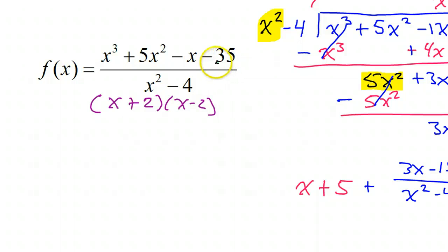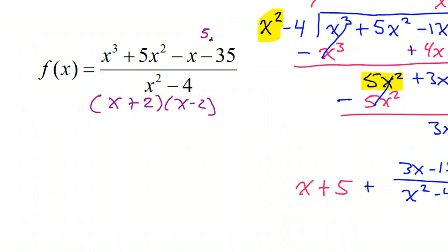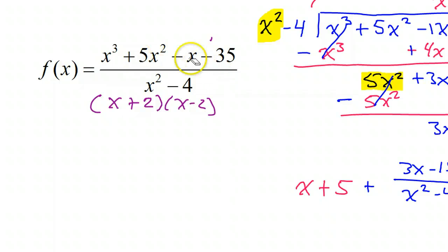I would factor the numerator and see if x minus two canceled out. But I can tell just by looking at it — the only possible factors of 35 other than one are five, seven, and 35. I know two is not a factor of 35, so this is not going to cancel out any factor up there. So, no holes.